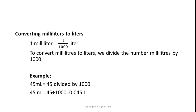If I have to convert millilitres to litres, 1 millilitre is equal to 1 upon 1000 litres, which means to convert millilitres to litres we divide the number of millilitres by 1000. For example, if I have 45 millilitres and wish to express it in litres, I divide 45 by 1000, which gives 0.045 litres. So 45 millilitres is equal to 0.045 litres.